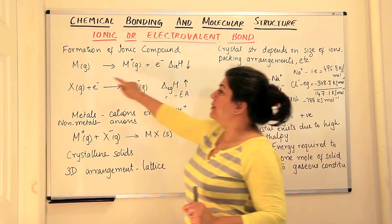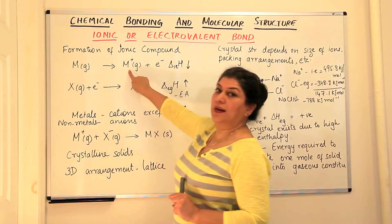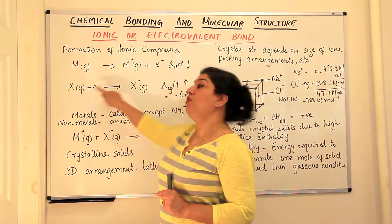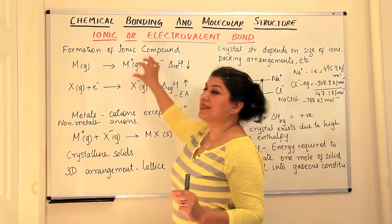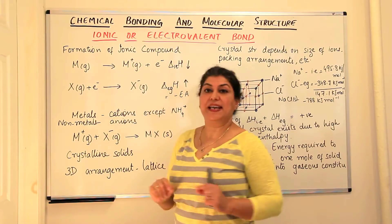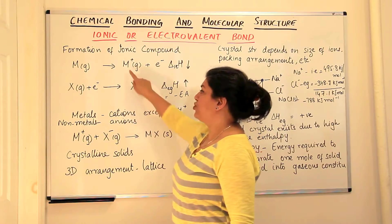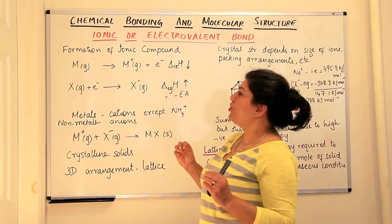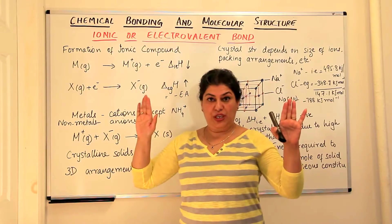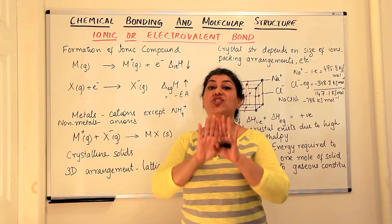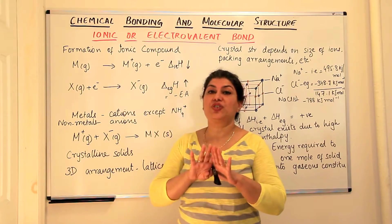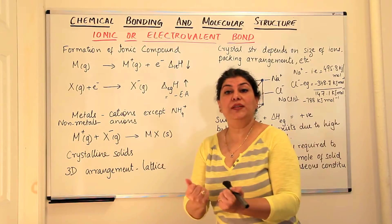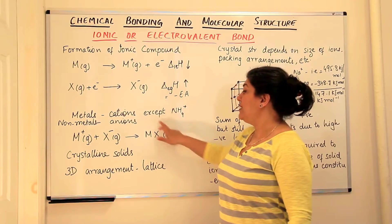Once the ions are formed, the metal, which was a gaseous metal, forms a gaseous cation, and a nonmetal, which was gaseous, forms a gaseous anion. But now these two gaseous cations and anions come together, and since they have positive and negative charges, electrostatic forces of attraction pull these atoms together and they form a solid known as the ionic compound. These forces of attraction due to opposite electrical poles are known as Coulombic forces.